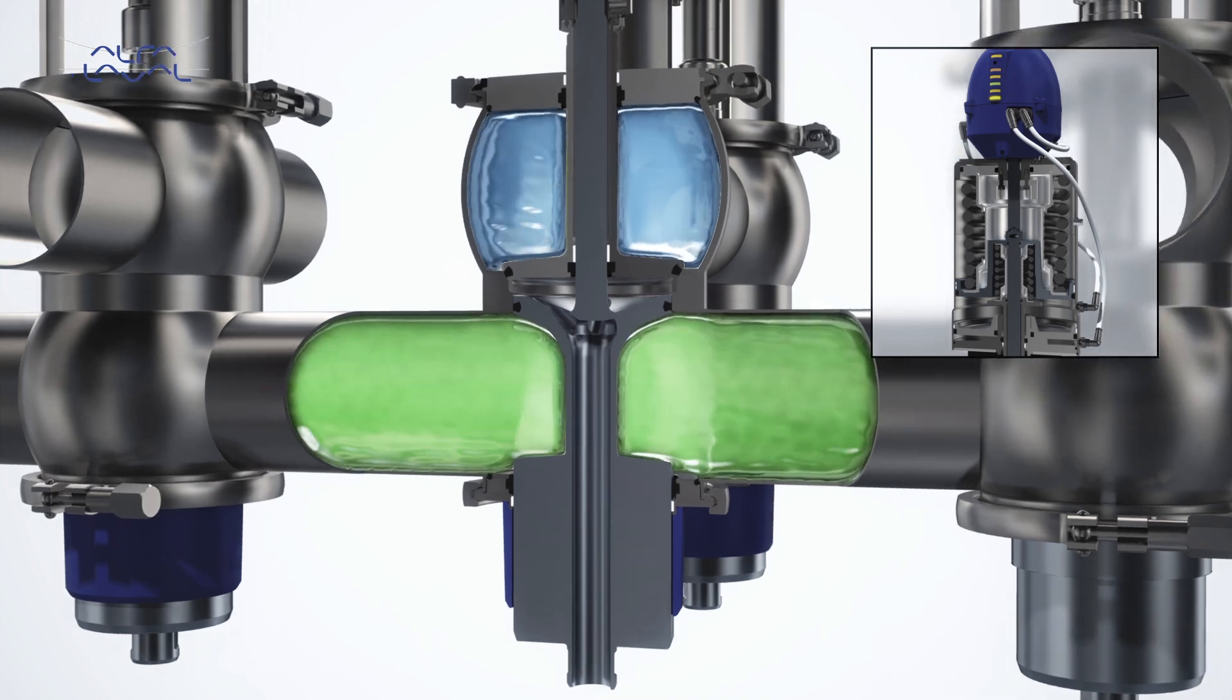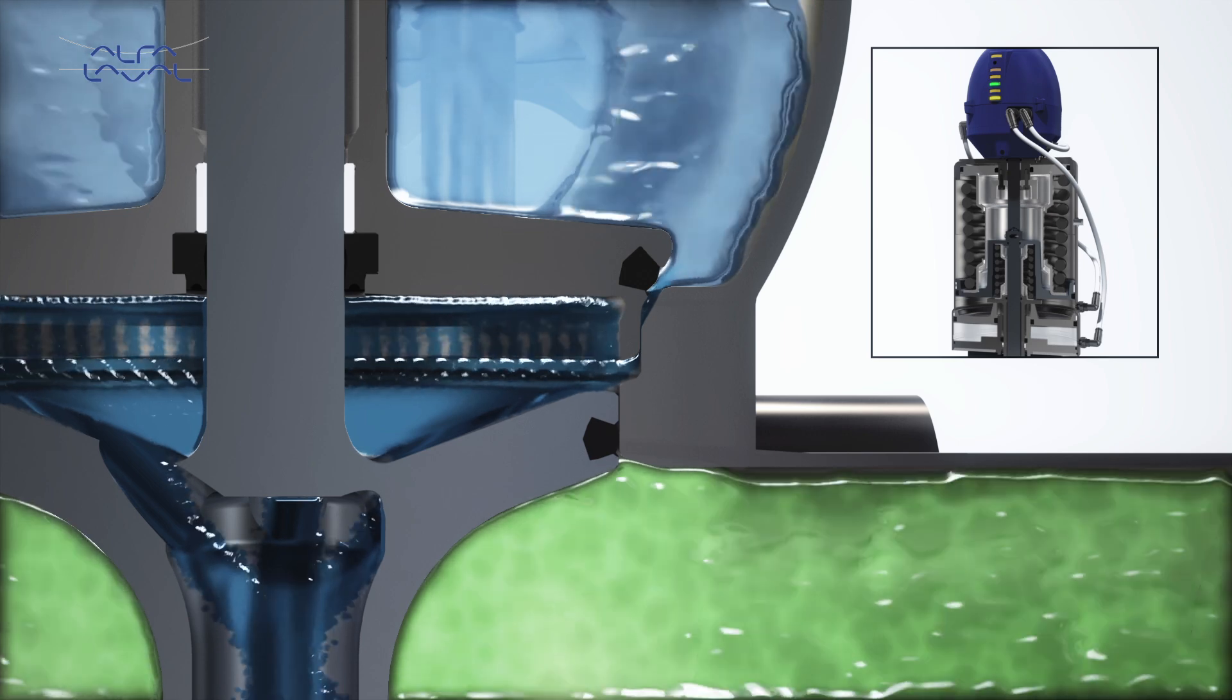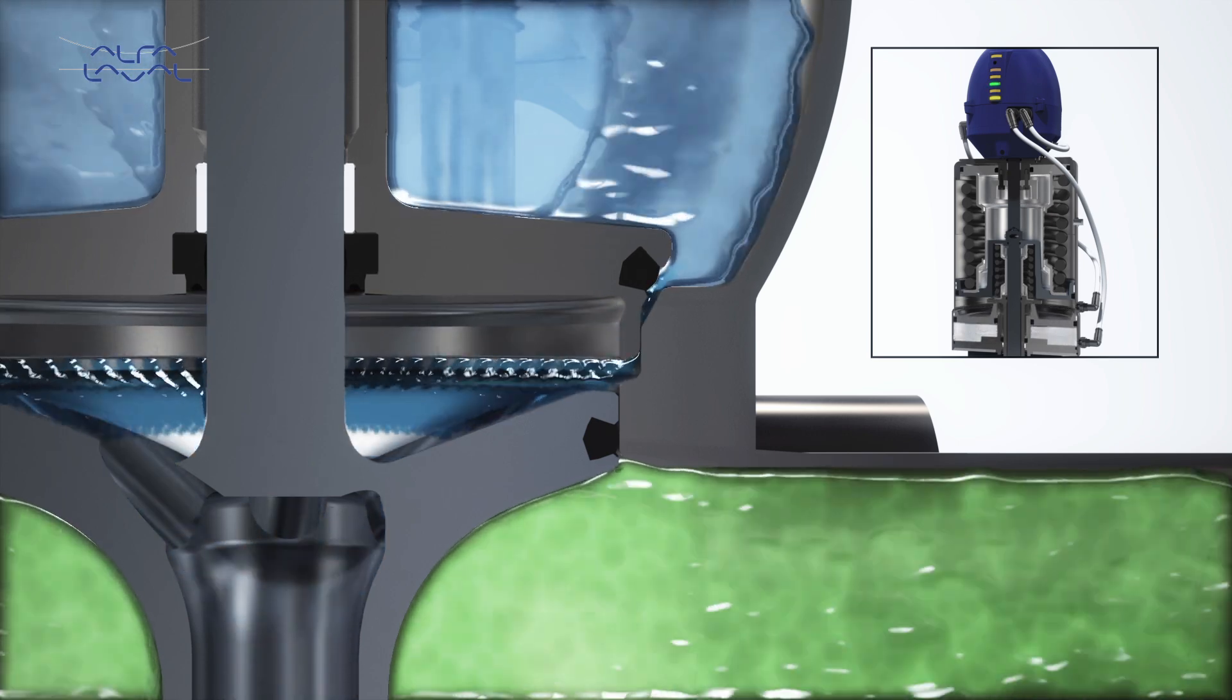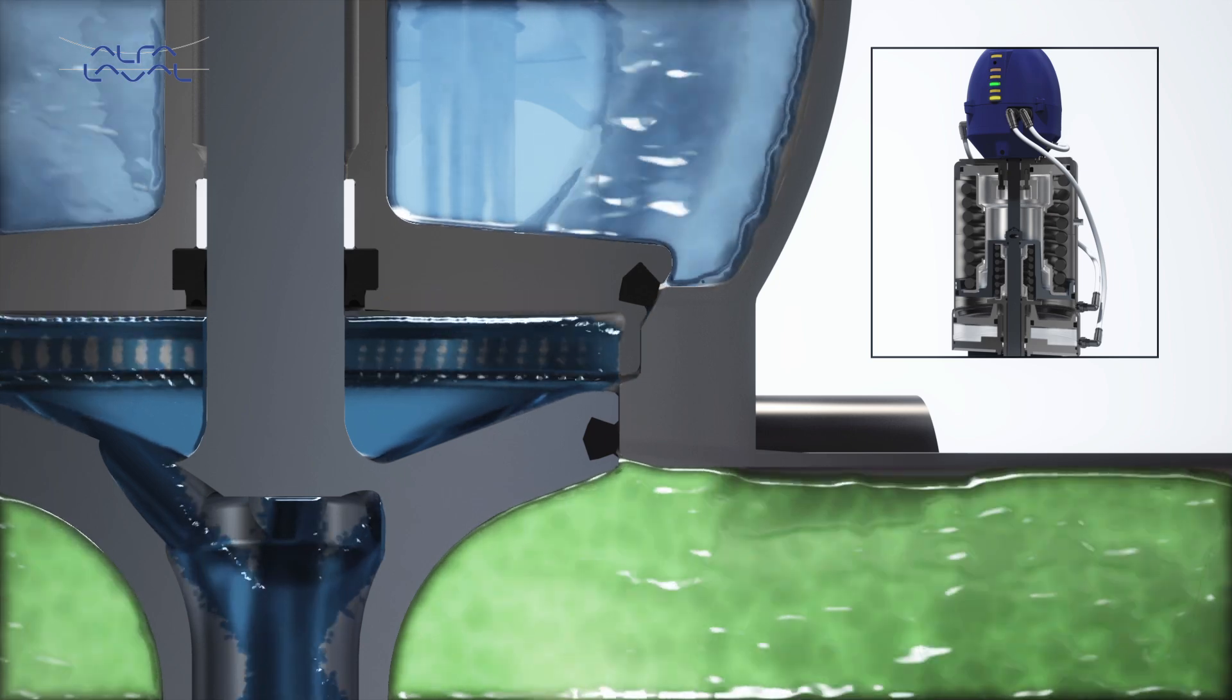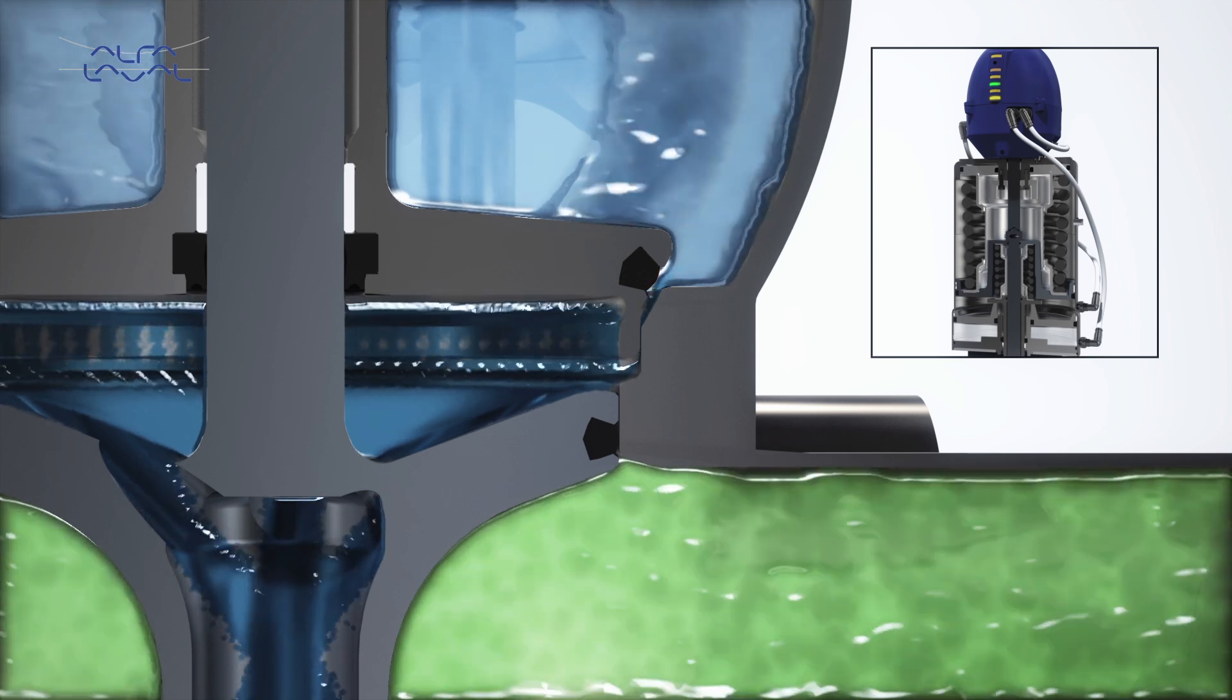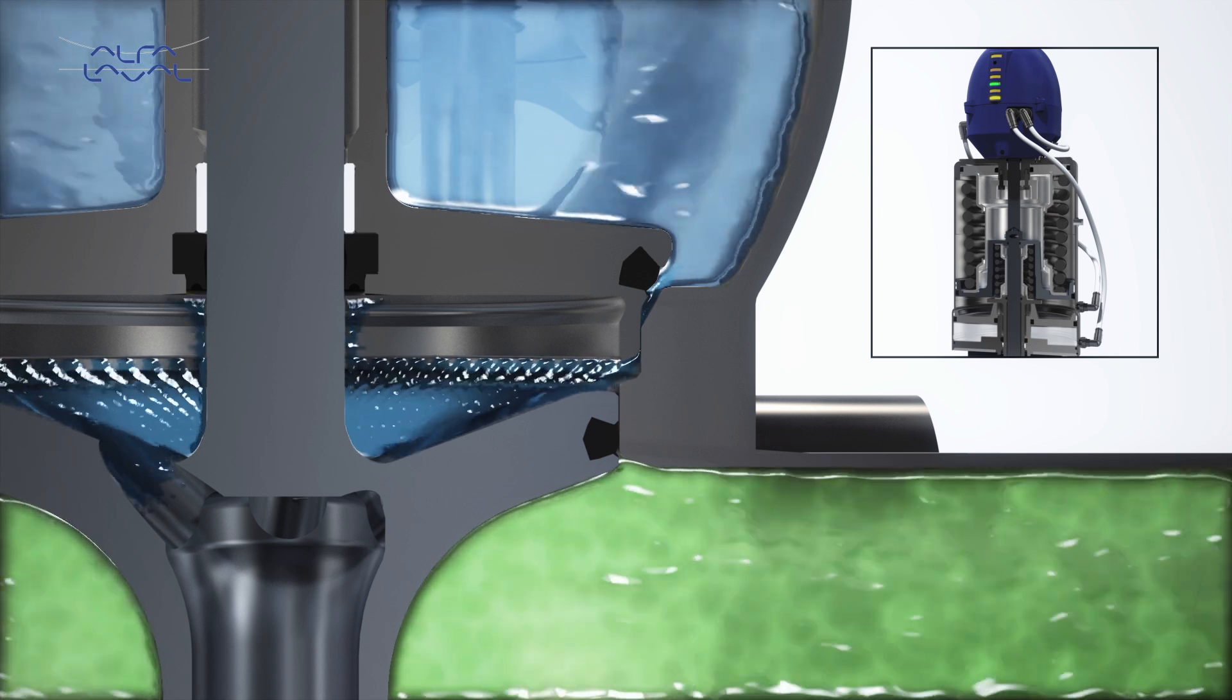Metal to metal stops in the actuator ensure precise positioning of the valve plug in the body, thereby ensuring a throttling edge, which enables exceptionally fast-acting cleaning during seat lift. This speeds up the cleaning process by creating high turbulence and scrubbing effects, making very efficient use of a minimal amount of CIP fluid.